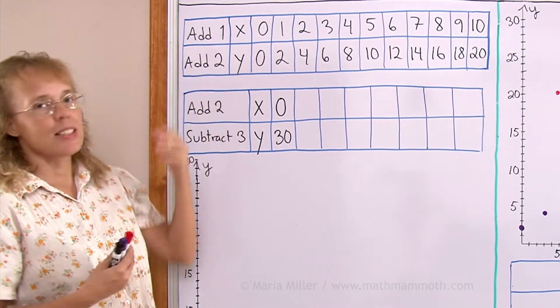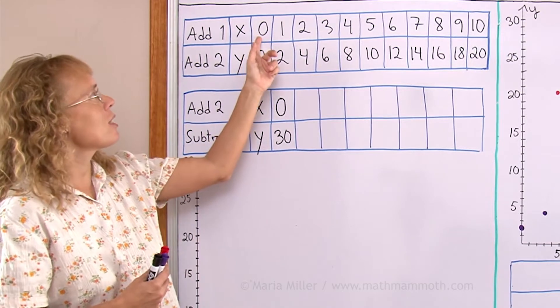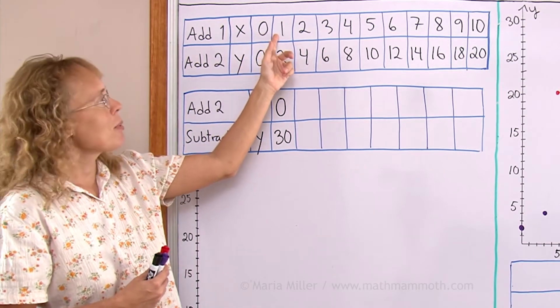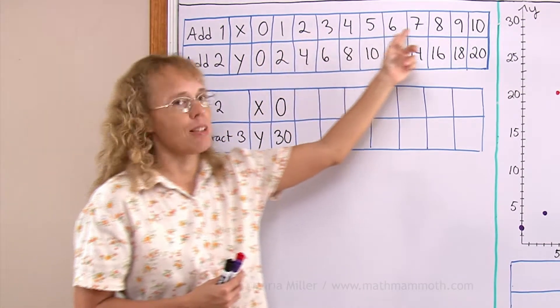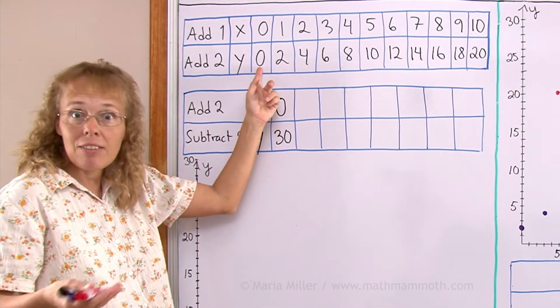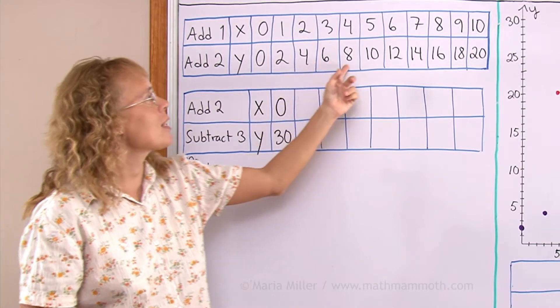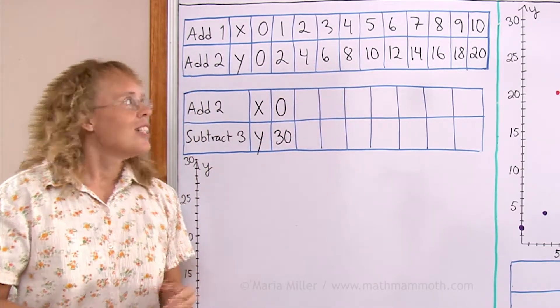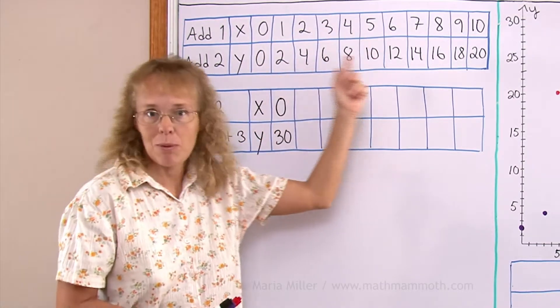So this is my first pattern where I add 1 each time. 0 plus 1 is 1, 1 plus 1 is 2. I add 1 so I get my counting numbers. Here I add 2 each time so I get the even numbers: 0, 2, 4, 6, 8, 10 and so on. So I have already made my two number patterns here.